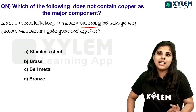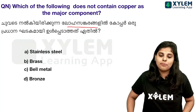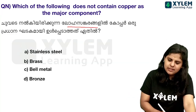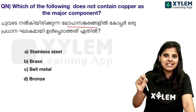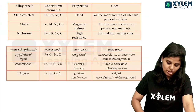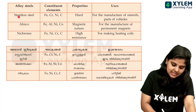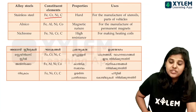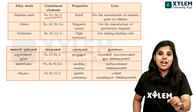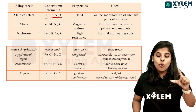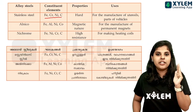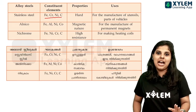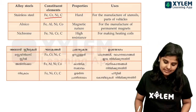Copper is the major constituent in brass, bell metal, and bronze. Stainless steel, however, is made of iron, chromium, nickel, and carbon. It does not contain copper. So the answer is stainless steel.